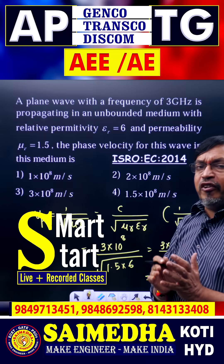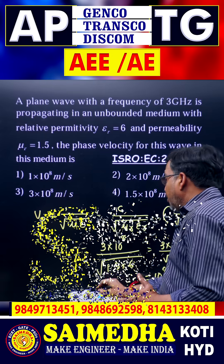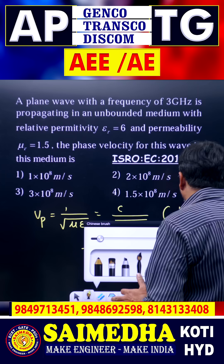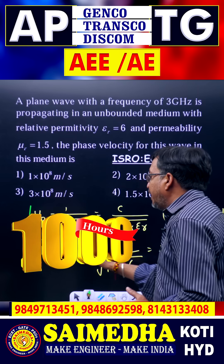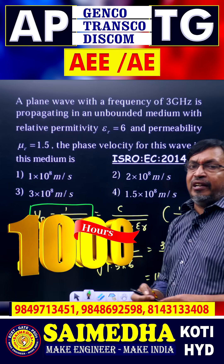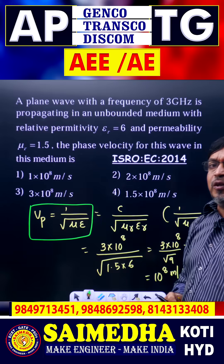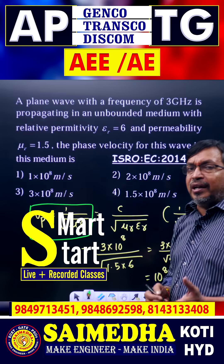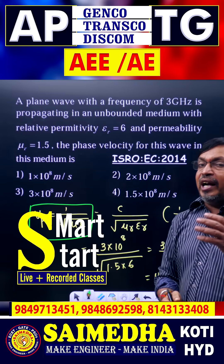We know that the velocity of wave propagation v equals 1 divided by the square root of mu epsilon, from electromagnetic wave characteristics and the omega by beta definition. Here, mu equals mu naught times mu r, and epsilon equals epsilon naught times epsilon r.